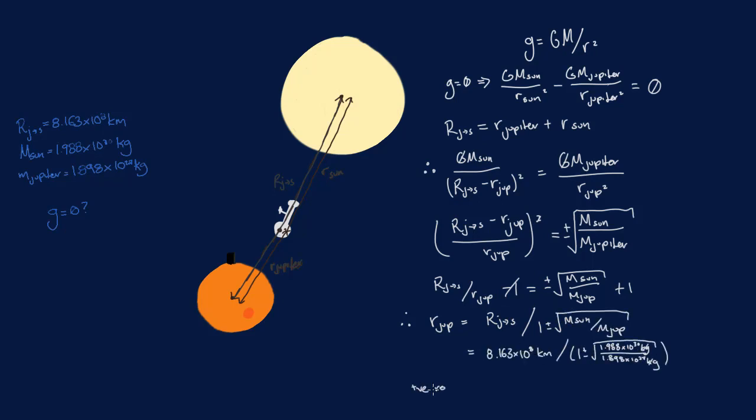If we substitute in our values, we find that using the positive root of our equation, the distance from Jupiter is 2.446 times 10 to the 7 kilometers.